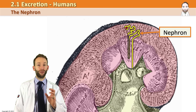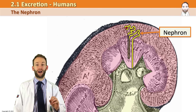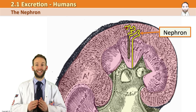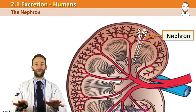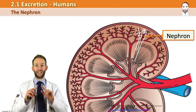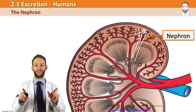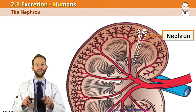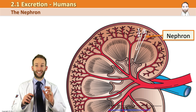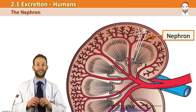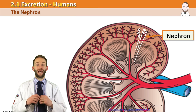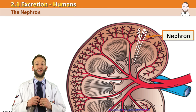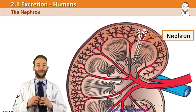These nephron tubules are supplied by a network of capillaries. As the blood enters the kidney via the renal artery, it splits into smaller and smaller branches until it reaches the very outer part of the kidney — the cortex. The arteries are now so small they're called arterioles, specifically the afferent arterioles, and these are the ones that supply the nephrons with blood.